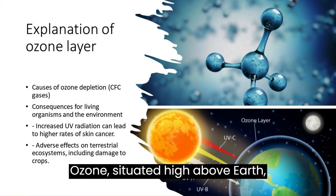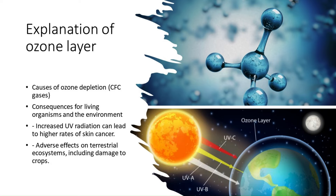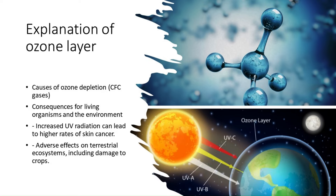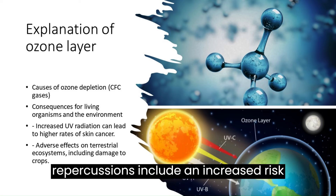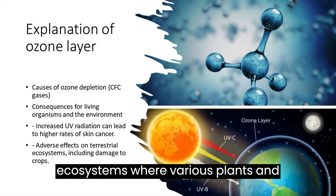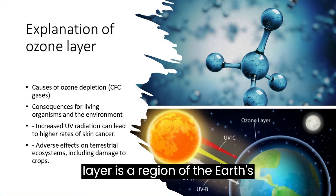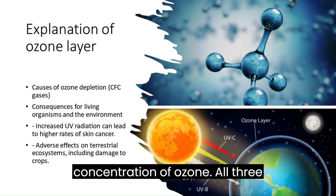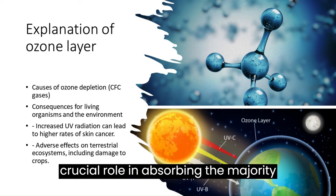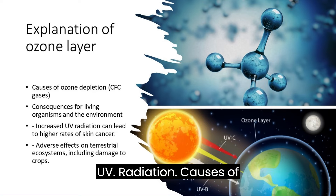Ozone, situated high above Earth, acts as a protective shield against the sun's harmful rays. Human activities, especially the use of certain chemicals like CFC gases, can damage this shield. The repercussions include an increased risk of skin cancers and harm to ecosystems where various plants and animals reside. The ozone layer is a region of Earth's stratosphere that contains a high concentration of ozone (O3) molecules, playing a crucial role in absorbing the majority of the sun's harmful ultraviolet (UV) radiation.